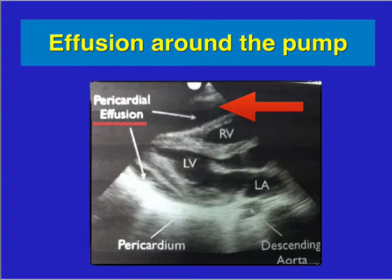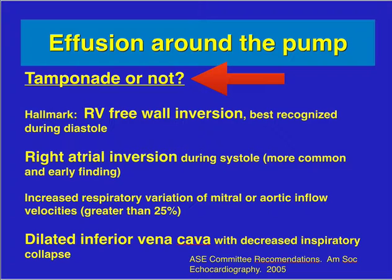When looking at effusion around the pump, determine if the effusion is causing tamponade. Hallmarks of tamponade include right ventricular free wall inversion, best recognized during diastole; right atrial inversion during systole, which is a more common early finding. You can also look at mitral and aortic inflow velocities and a dilated inferior vena cava. The three most reliable signs are right ventricular assessment, dilated IVC, and right atrial inversion.